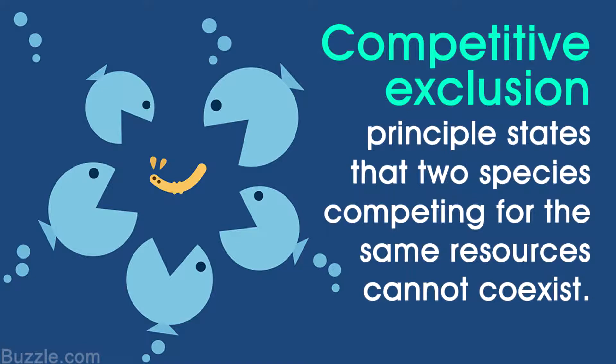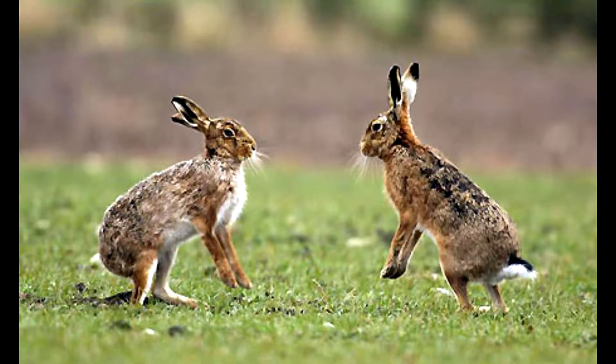The two types of niches are the fundamental niche and the realized niche. To illustrate these two terms, a species may have a fundamental niche that allows it to be widespread, say, in the state of Kansas.